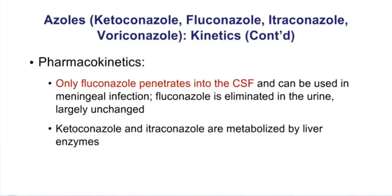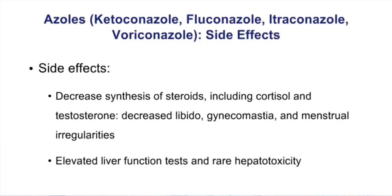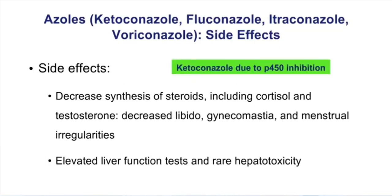Another key kinetic property of the azoles is their ability to inhibit P450 enzymes, where ketoconazole is the most classic inhibitor. Because of this P450 inhibition, ketoconazole inhibits the synthesis of steroids including cortisol and testosterone — the steroid pathways involve many P450 enzymes that ketoconazole can inhibit. Side effects include decreased libido, gynecomastia, and menstrual irregularities — another reason to limit its use.